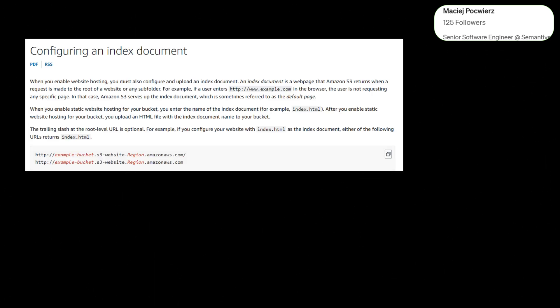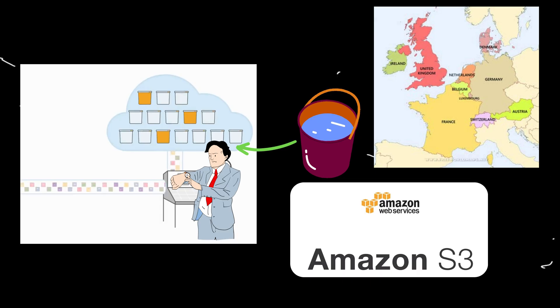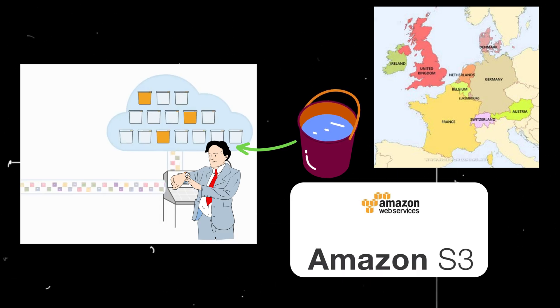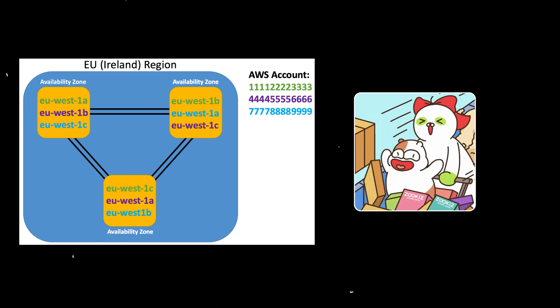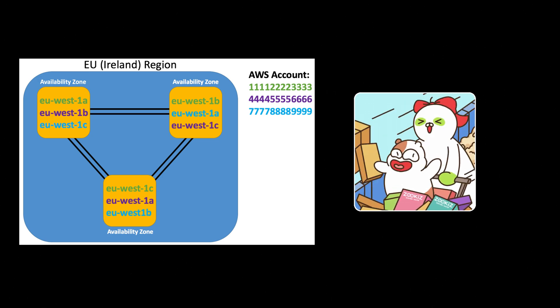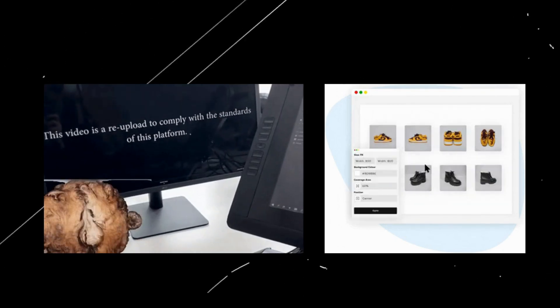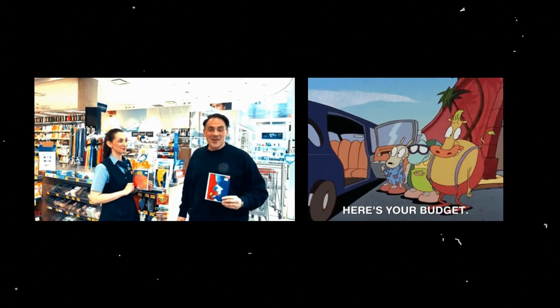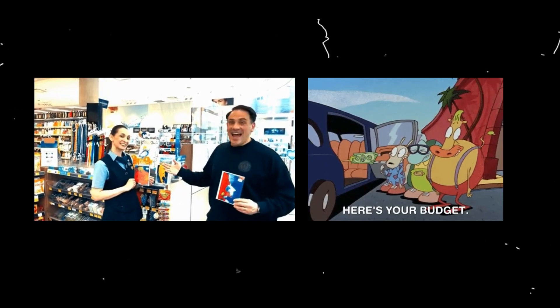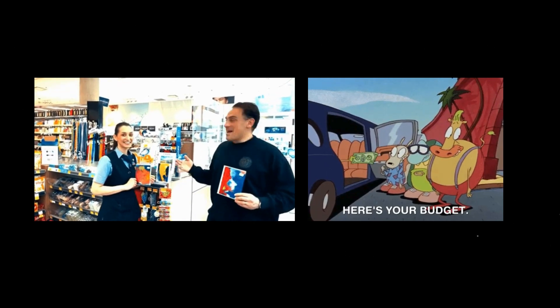He created a humble S3 bucket in the EU West 1 region — the digital equivalent of renting a small storage unit in Ireland. He uploaded some files for testing, feeling confident he was well within the free tier limits, like a shopper carefully calculating the cost of groceries to avoid exceeding their budget.